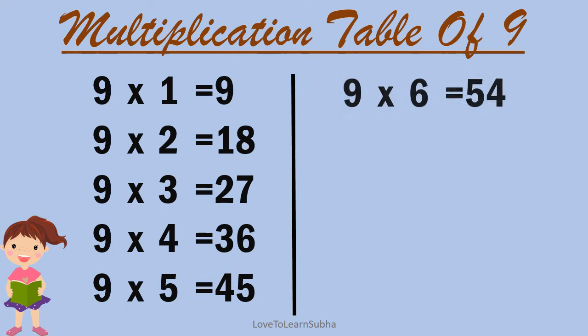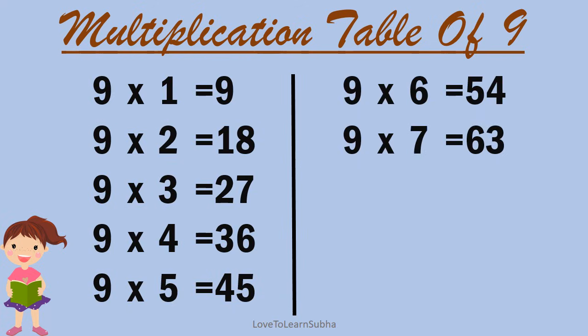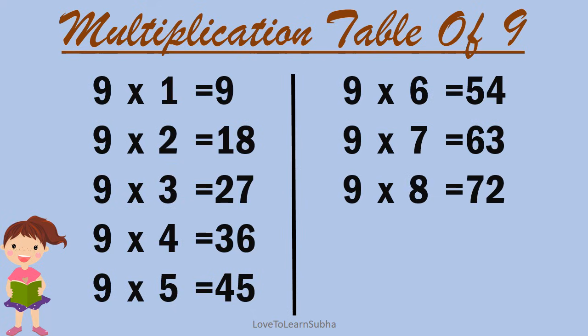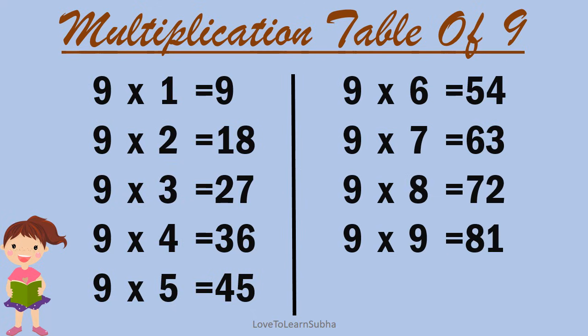9 sixes are 54, 9 sevens are 63, 9 eights are 72, 9 nines are 81.